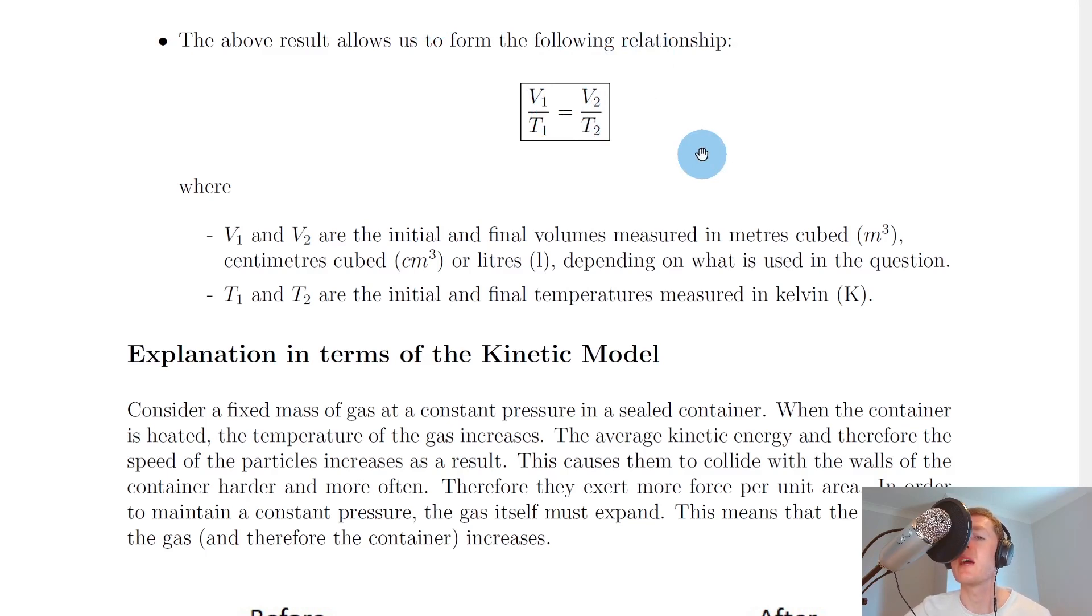Which was found from the graph in the experiment video in Charles' Law, where we had to introduce the Kelvin scale in order to have a graph with a straight line going through the origin. So you cannot use this equation with temperature in degrees Celsius, it has to be in Kelvin.